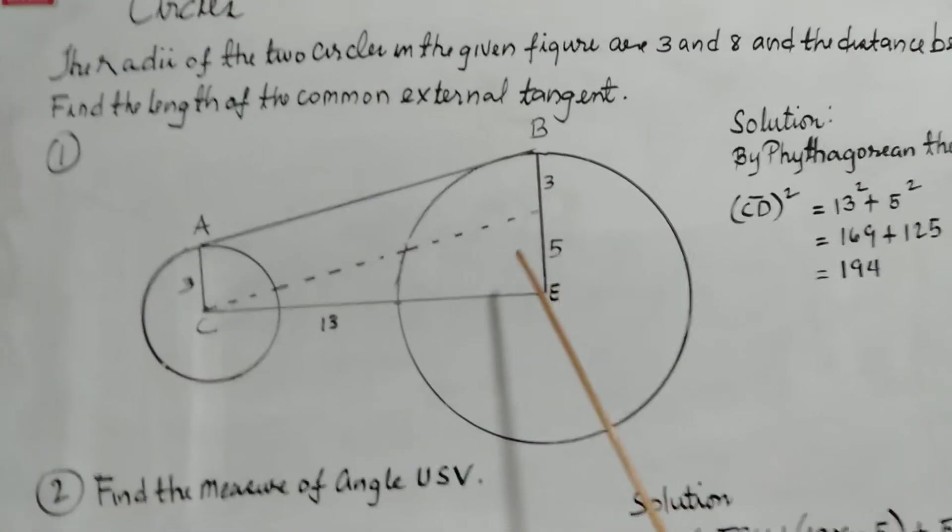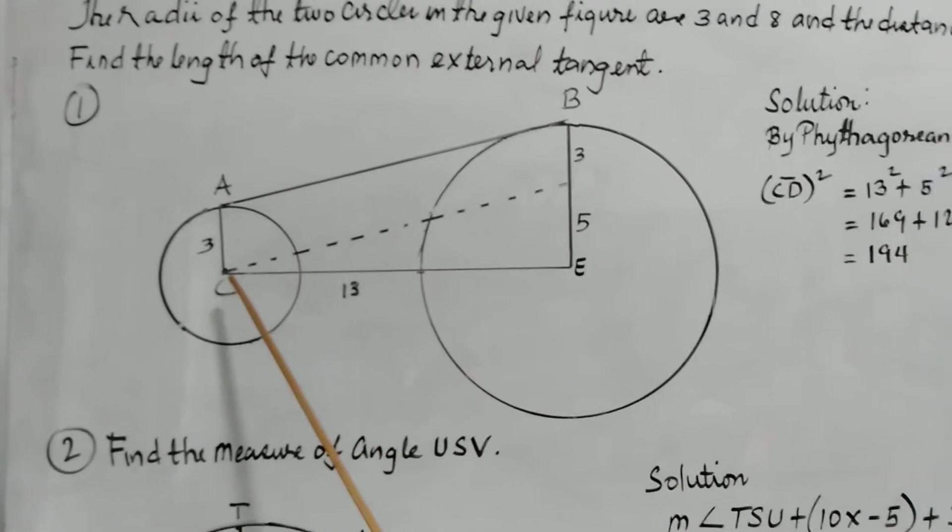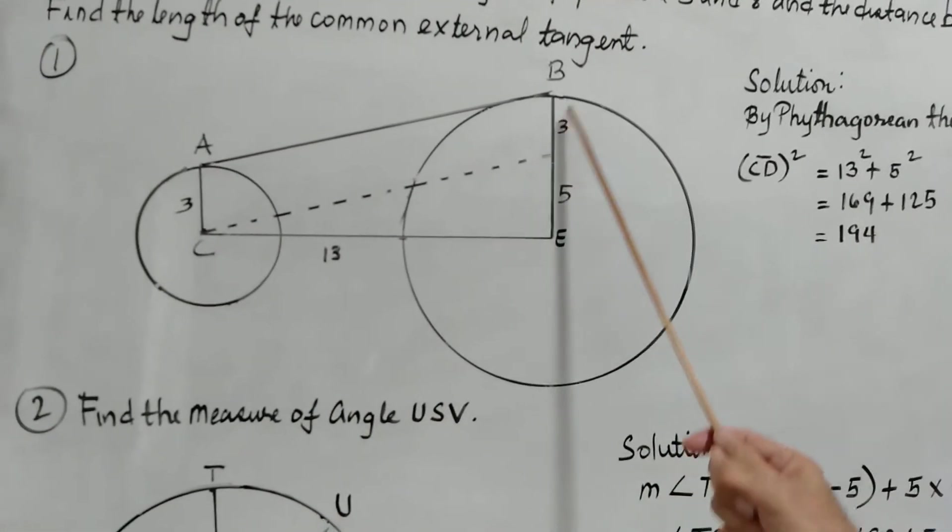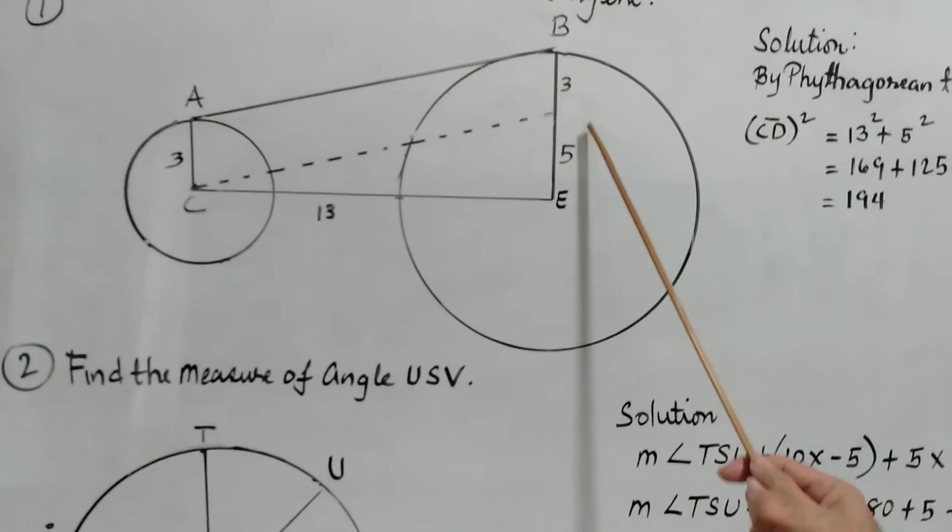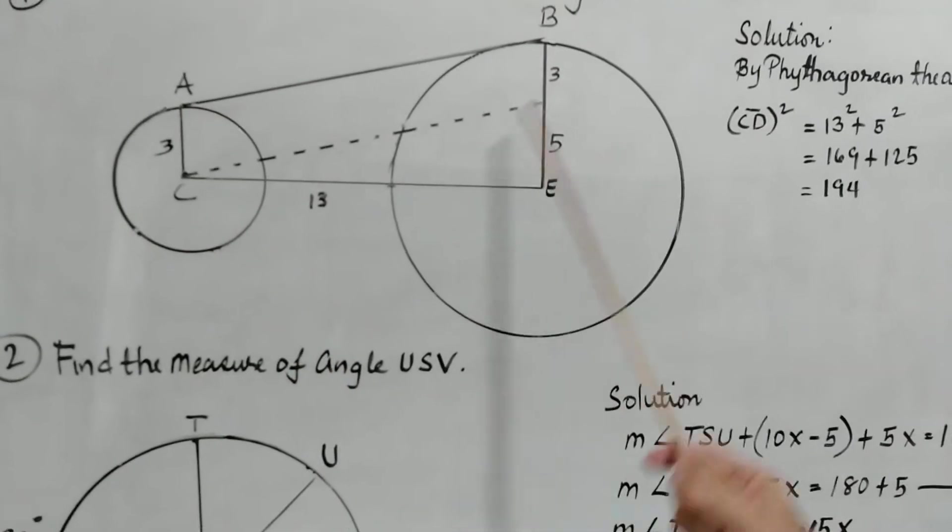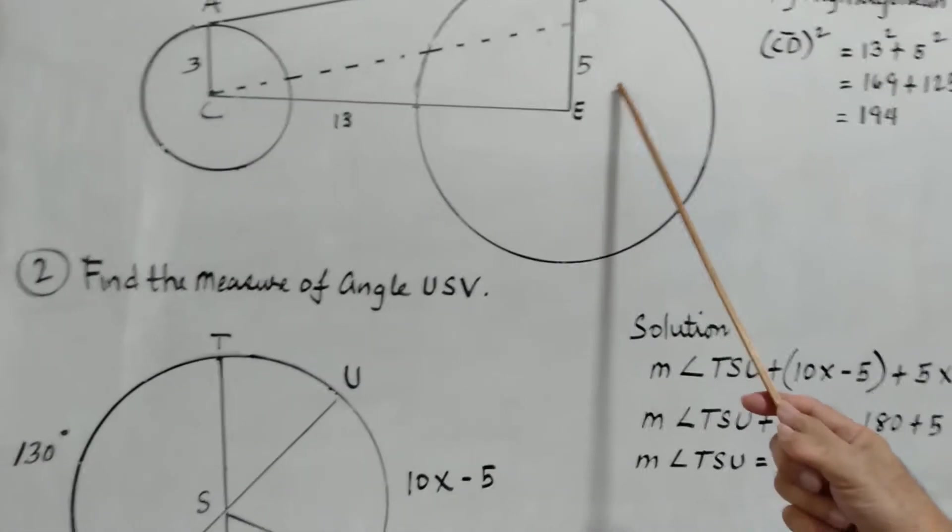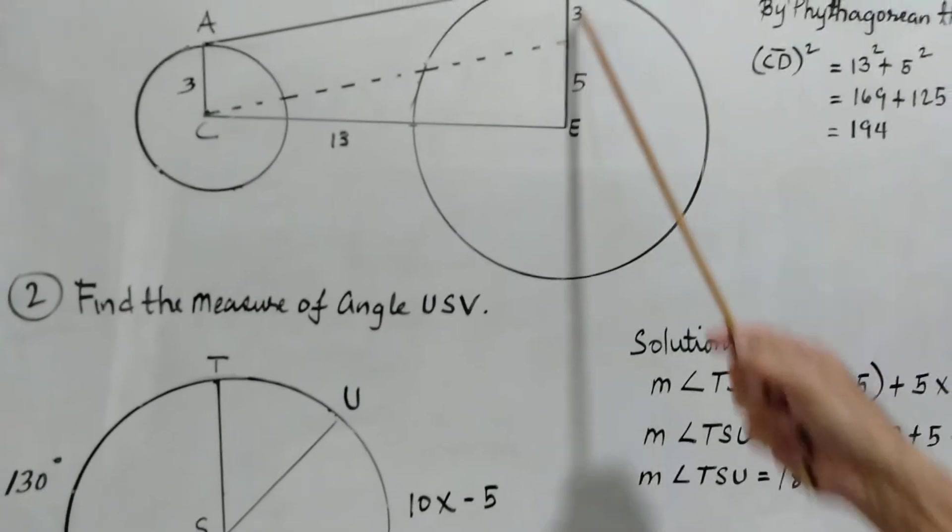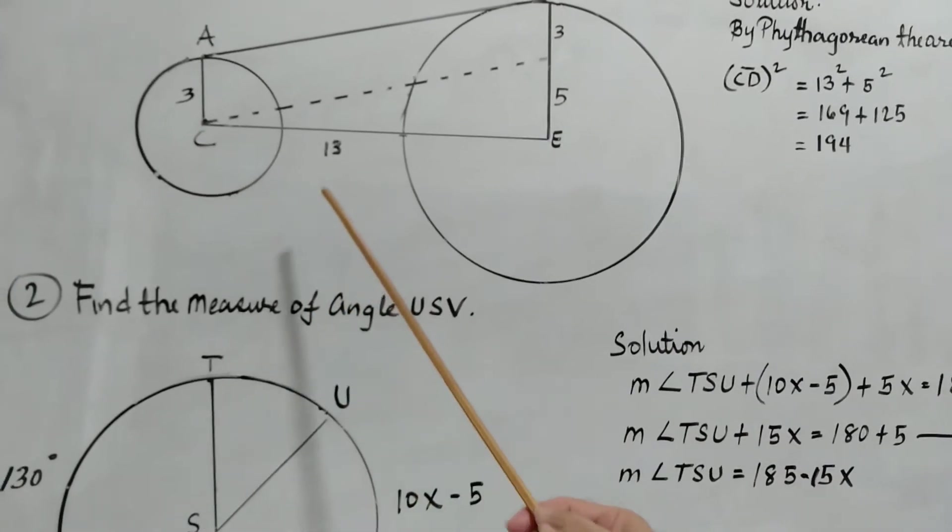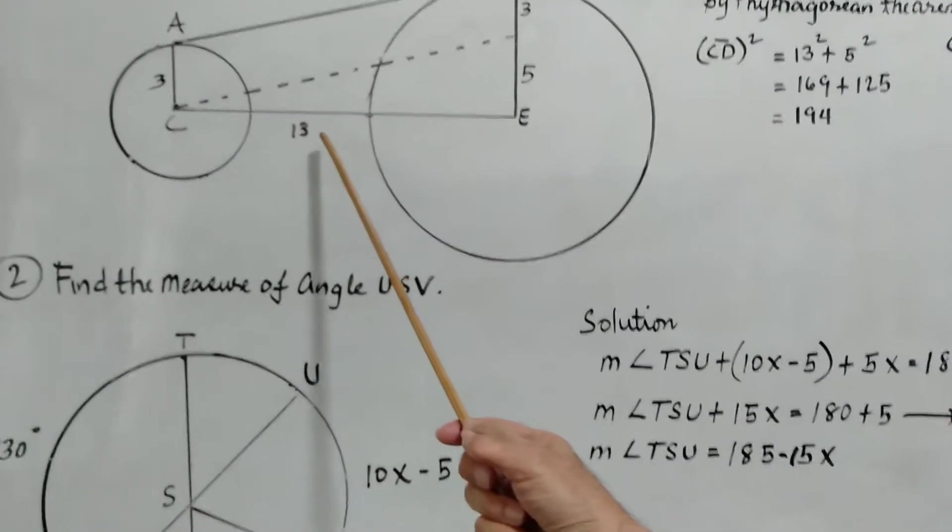As you can see, we draw a parallel line from C to the radius of the second circle, and label it equal to the radius of the small circle, and the remaining part of this radius here is 5. So we have here 8, the radius of the big circle, and 3, the radius of the small circle, and the distance between the centers is 13.